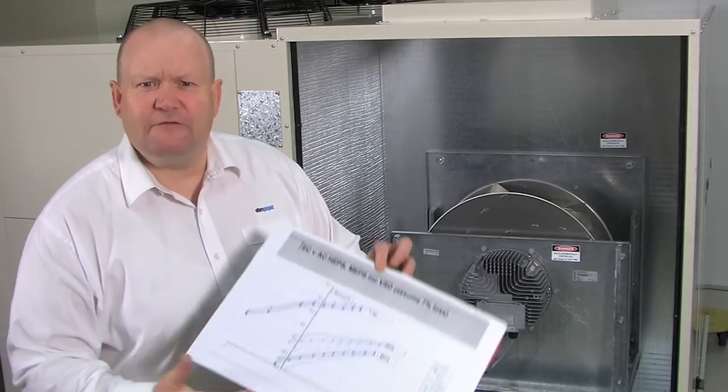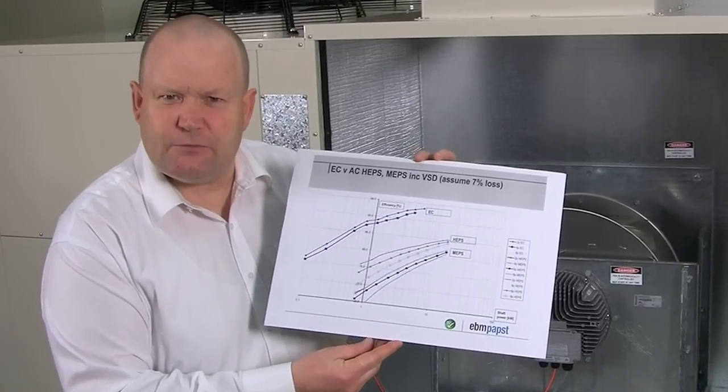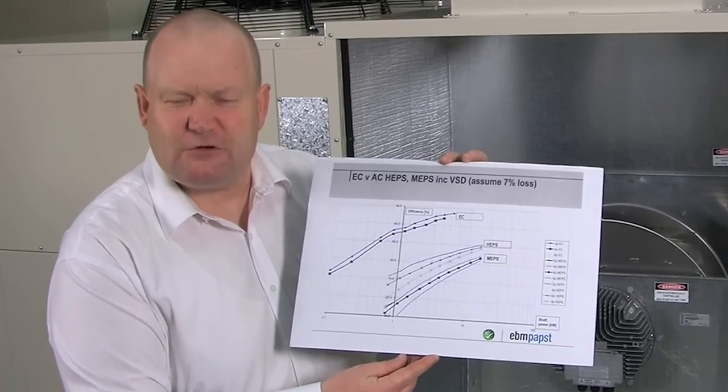To explain that, I've done a graph here showing the efficiency difference between an EC product and MEPS and HEPS three phase motors.